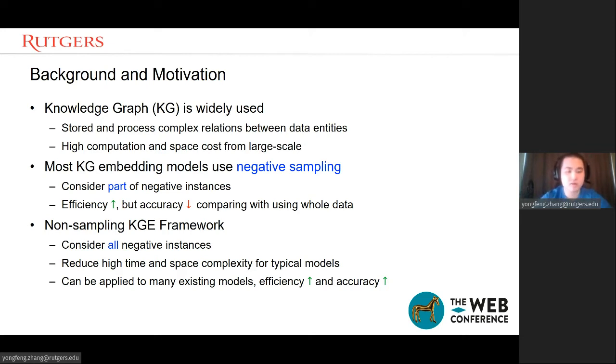We, however, reconsider using the whole data set. We consider all the negative instances during each epoch. We propose non-sampling knowledge graph embedding framework, and we propose a solution to solve the high time and space complexity for typical models. And we show that this framework can be applied to many existing negative sampling based models and improve the efficiency and accuracy.